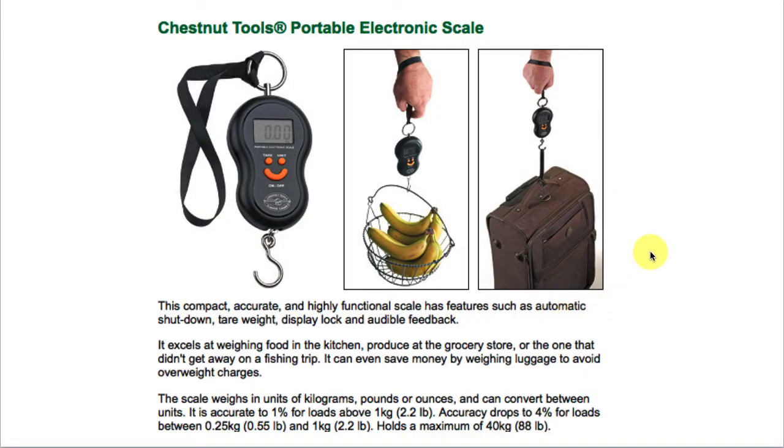Here's a similar system. We've got a device for measuring luggage, also from Lee Valley. Compact, accurate, and highly functional. It says it's accurate to 1% for loads over a kilogram. And it drops off to about 4% for small loads, which is no big surprise.